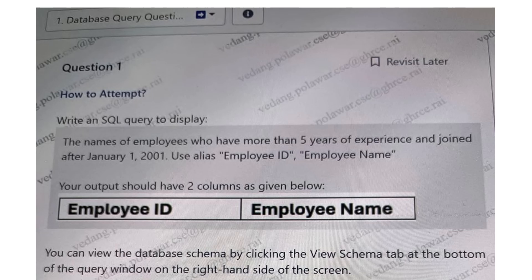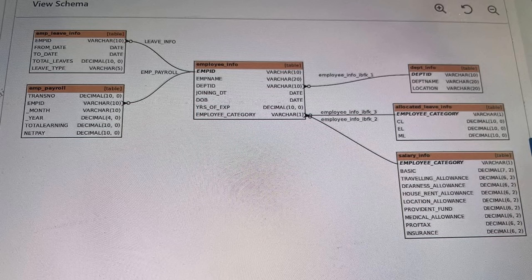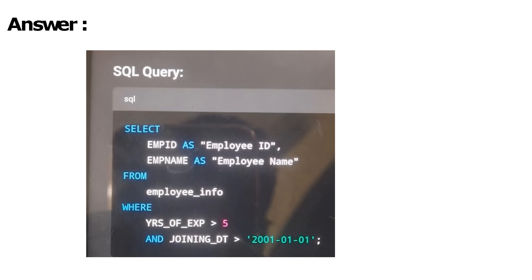Use EmployeeID and EmployeeName. Your output should have 2 columns as given. For this question, they have also given a schema — we have to view that schema and write the query according to it. The answer is: SELECT EmployeeID as EmployeeID, EpName as EmployeeName FROM EmployeeInformation WHERE years of experience greater than 5 AND joining date greater than 2001.